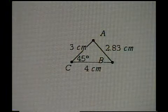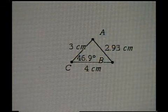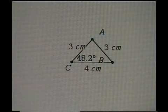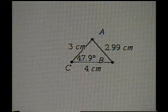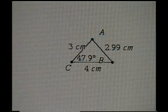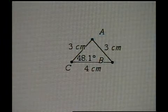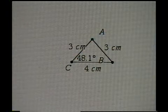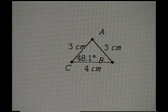Let's get side C to become a length of 3. There it is. And the angle at vertex C is indicated as 48.1, but you can record 48.16 degrees.